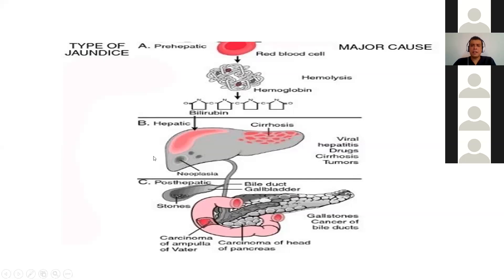The second type is hepatic jaundice, which may be caused by some problem inside the liver. It could be due to viruses — hepatitis A, B, and so on — various drugs, cirrhosis, alcohol; anything which can destroy the structure of the liver can cause hepatic jaundice.